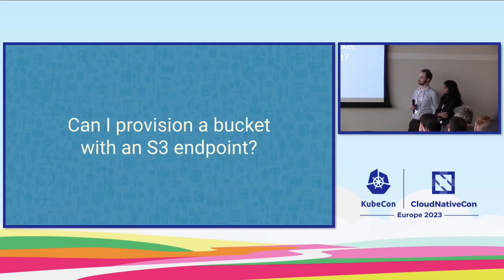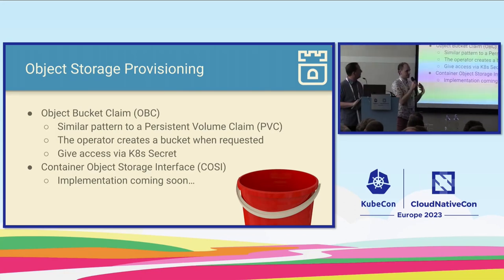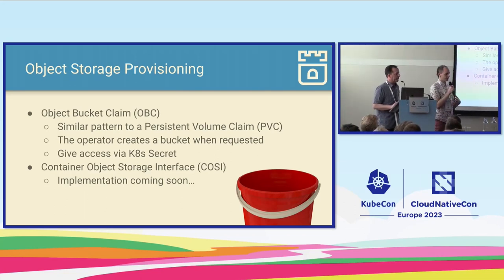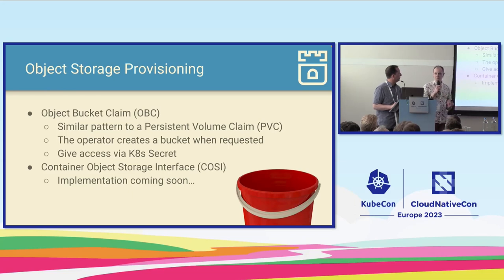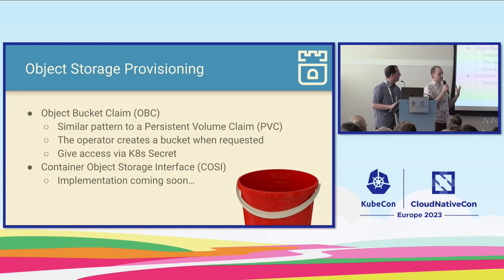Can I provision a bucket with an S3 endpoint? The current implementation for creating a bucket and getting access in Rook is with object bucket claims, similar to PVCs. The bucket gets created when you request it, and you get access via a secret. This was essentially a prototype for what became COSI—it morphed into COSI, a Kubernetes special interest group, which is now almost in beta.